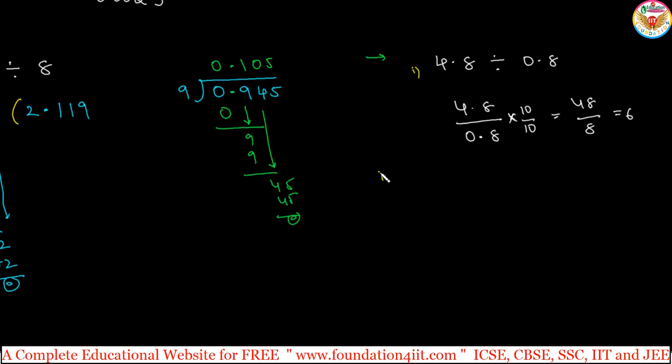See one more example. For example, 5.625 divided by 1.25. In this dividend place, this numerator and denominator, the denominator has two decimal places.